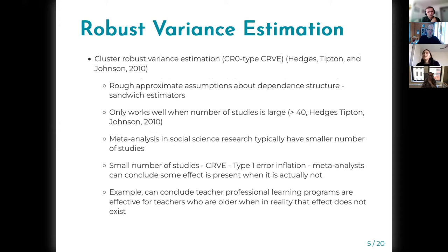Hedges, Tipton, and Johnson 2010 introduced cluster robust variance estimation to be applied to meta-analysis. It does not require information on the correlation or covariance structure of the effect sizes, but it makes rough assumptions about the dependent structure using sandwich estimators.